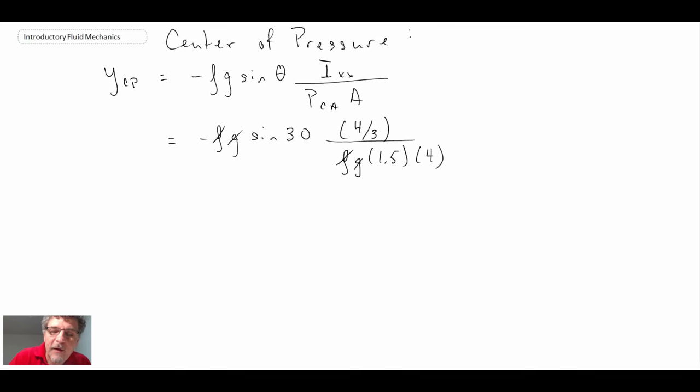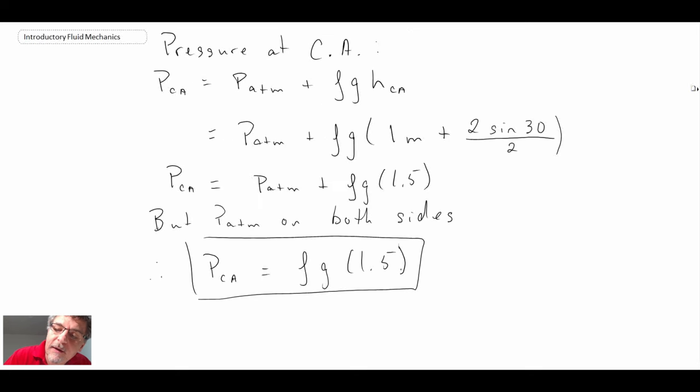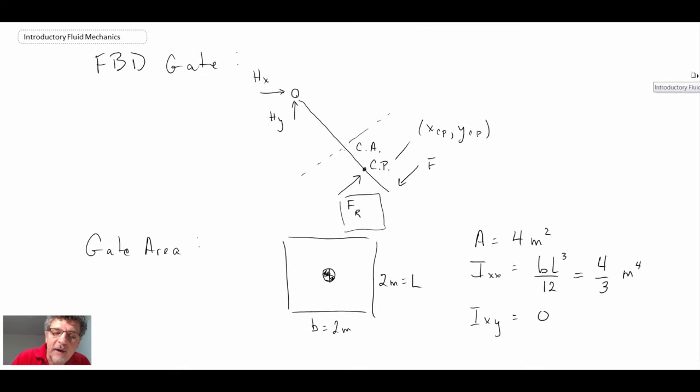So let's work on the center of pressure now. So I've introduced the values for the y-axis center of pressure location. And with that, what we then obtain is YCP is minus 0.1111 meters. And remember, this is with respect to the center of area. So if we look at our schematic, the fact that it's coming out negative, the y direction was in that way. The fact that it's negative, that means that it's below. This was y positive. And this is y negative. So it's down below in terms of the location.